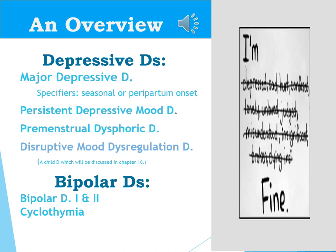For the depressive disorders, we'll look at four specific disorders: major depressive disorder, and we'll tackle what a specifier is later on in the chapter. Persistent depressive mood disorder, premenstrual disorder, and the disruptive mood dysregulation disorder — since it's a child and adolescents associated disorder, we'll wait to cover that in chapter 16.